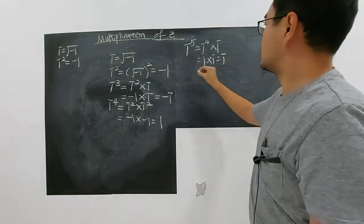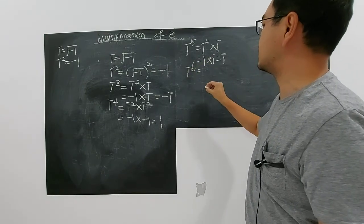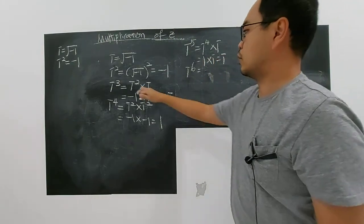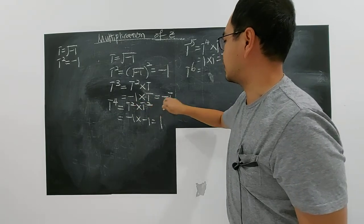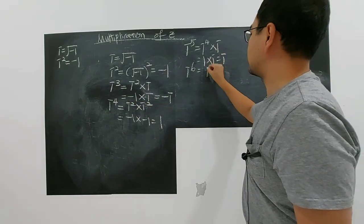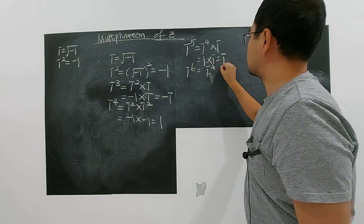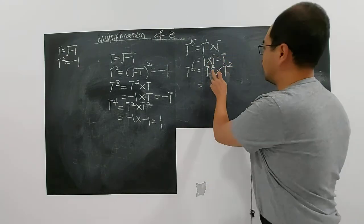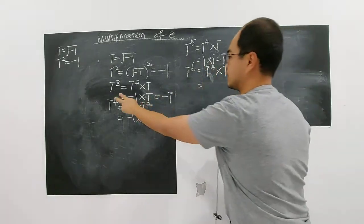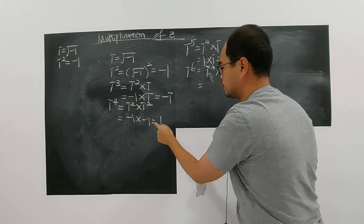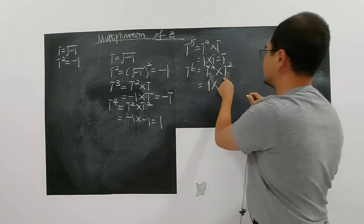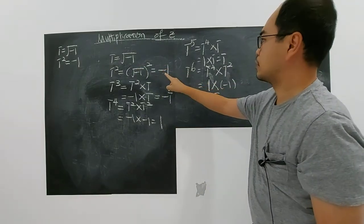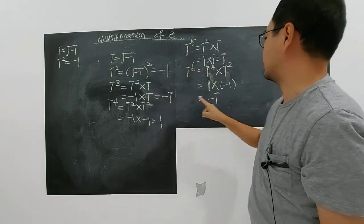Now for i to the power of six — I'll use i to the power of four times i squared. i to the power of four is one, and i squared is negative one, so you get negative one. Can you see that the values repeat? So i to the power of six is negative one.